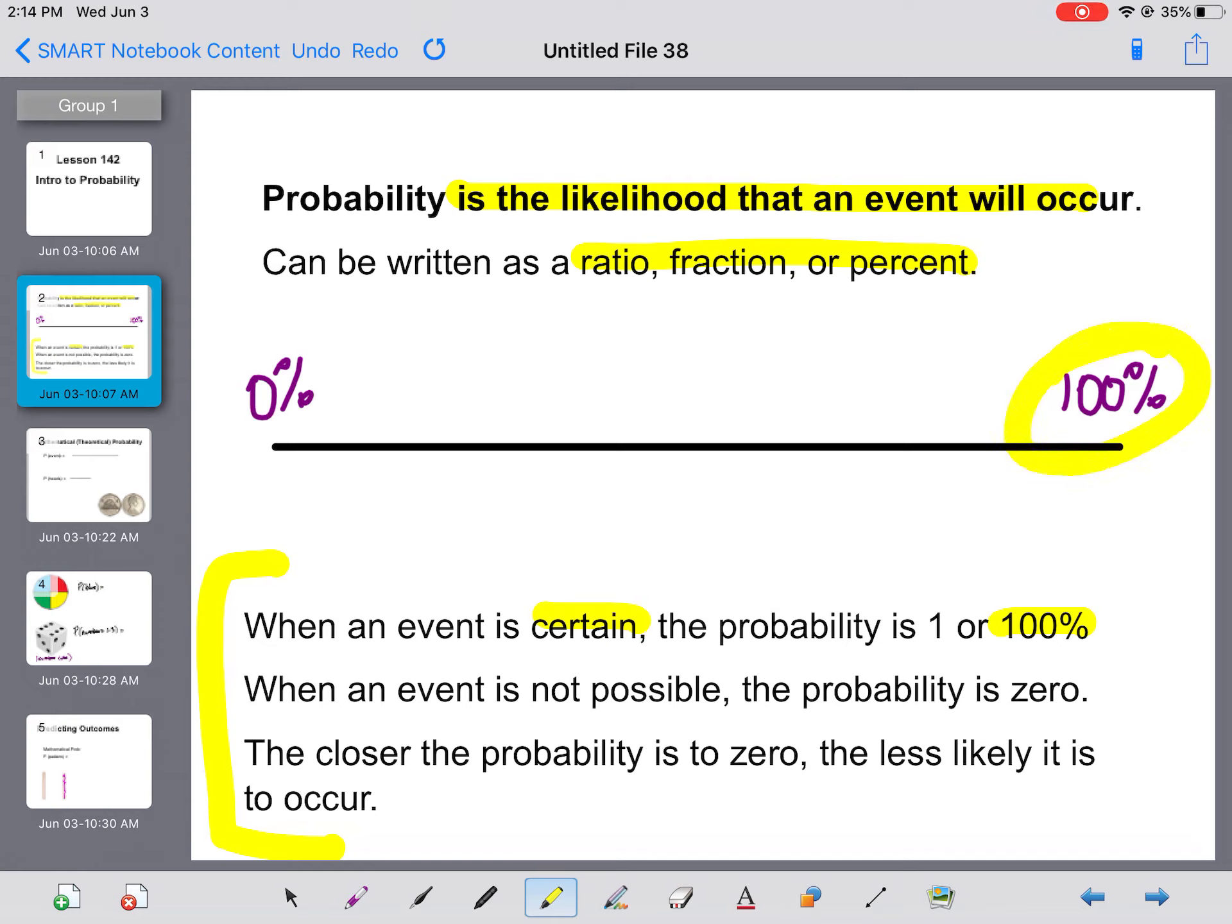However, the day after Thursday being Monday has a zero percent chance of happening. It is not possible. Monday does not come after Thursday, so the probability of that happening is zero.